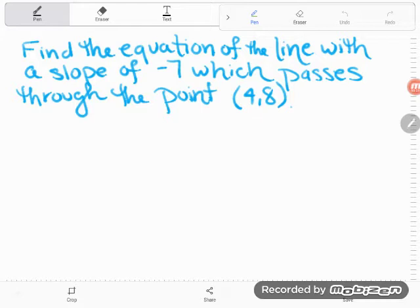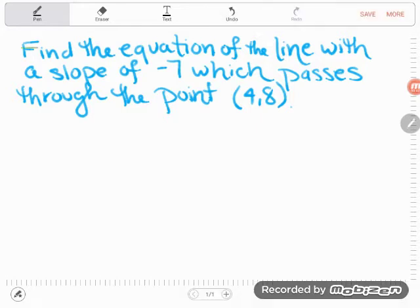It says, find the equation of the line with a slope of negative 7 which passes through the point (4,8). So a good thing to do when you're looking at a word problem is, before you even begin, start with where am I starting? What have I been given? What do I already know? And where am I going? What's the end goal?